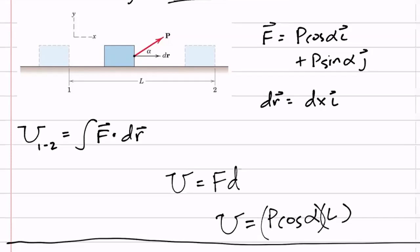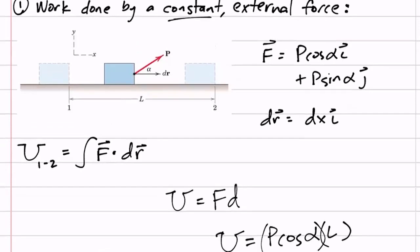Does that make sense? For a constant force, you take the component of force in the direction of the distance and multiply. It's not always going to be cosine — just look at the setup and find only the component that's in the direction of the displacement.